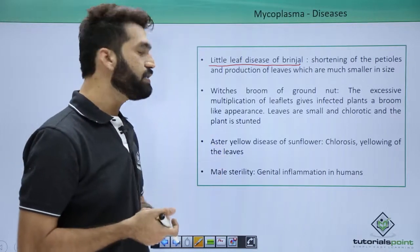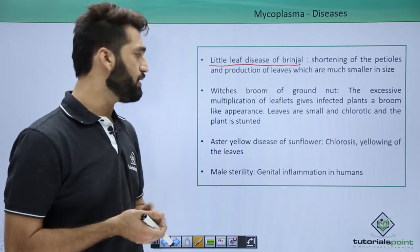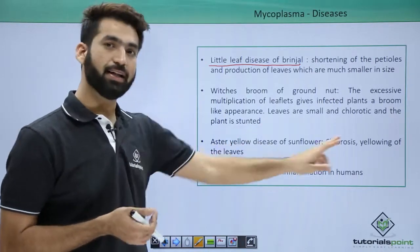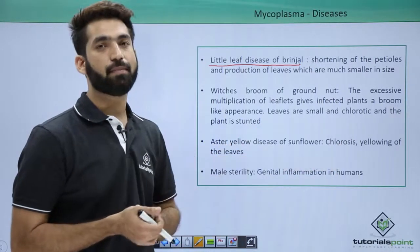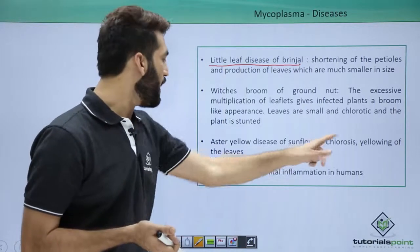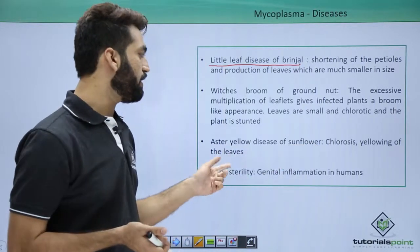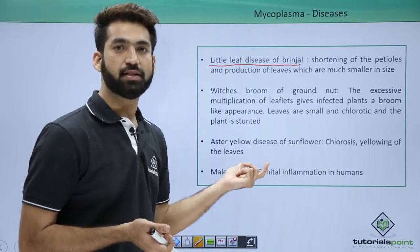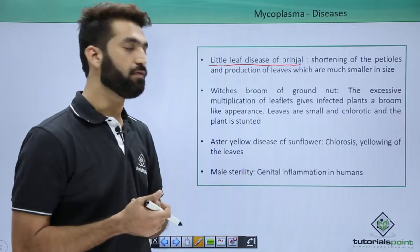The third disease is called aster yellow disease in sunflower. Again, chlorosis occurs — the leaves will be turning yellow. This yellowing of leaves is called chlorosis.